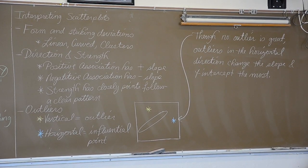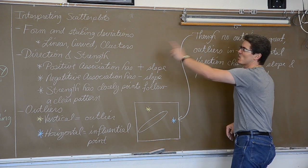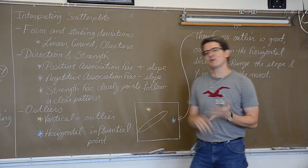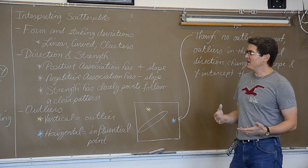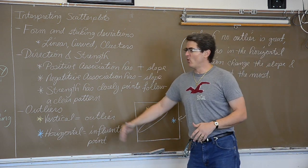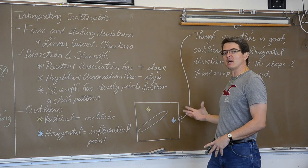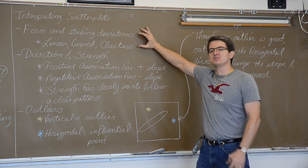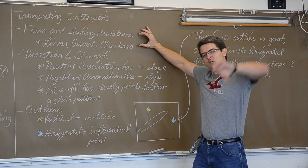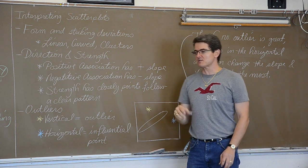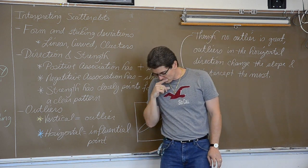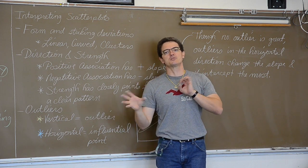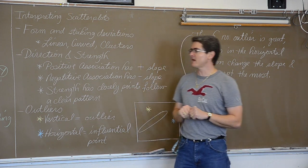Interpreting scatter plots. When you look at a scatter plot and you want to tell your teacher or the person grading your AP test, what do you see, make sure you hit these points. And again, this is an outline of topics and concepts, not a hard example, but you want to talk about the form. What do you see? Is the pattern linear? Is it curved? Or is there just some clusters of points? Maybe you are comparing the SAT scores from the south to the north. You might notice a cluster between those two regional areas in your scatter plot.